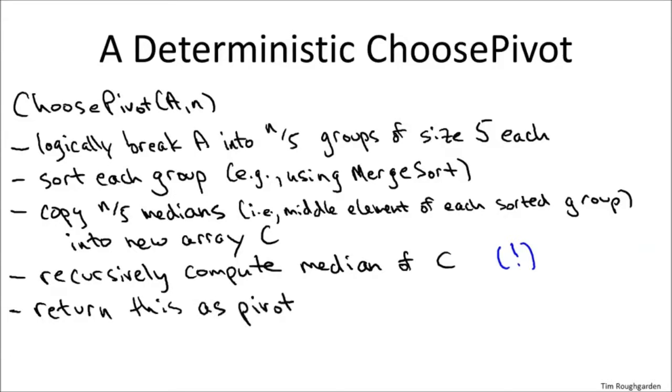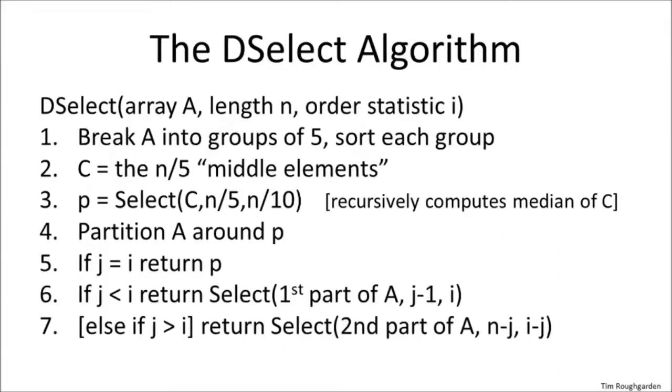It doesn't really matter how you do the sorting because after all there's only five elements, but you know, let's use merge sort, what the heck. Now what we're going to do is we're going to take our first round winners and we're going to copy them over into their own private array. Now this next step is the one that's going to seem dangerously like cheating, dangerously like I'm doing something circular and not actually defining a proper algorithm. So C you'll notice has length n over five. We started with an array of length n, this is a smaller input, so let's recursively compute the median of this array capital C. That is the second round of our tournament amongst the n over five first round winners, the n over five middle elements of the sorted groups. We recursively compute the median, that's our final winner and that's what we return as the pivot element from this subroutine.